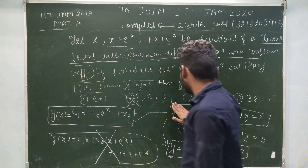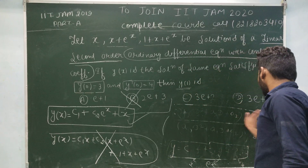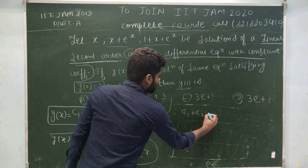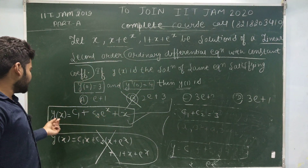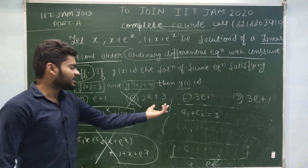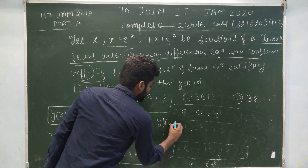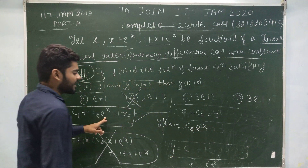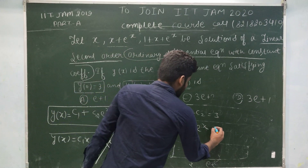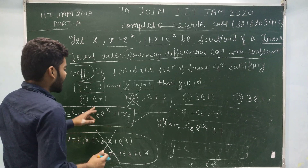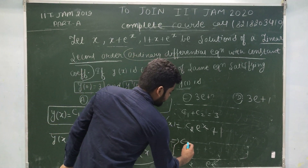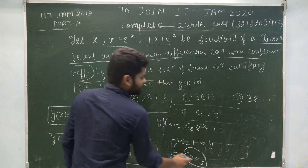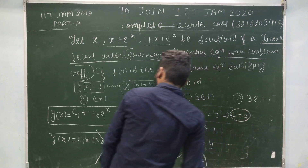With the correct form y(x) = c₁ + c₂e^x + x, it is very easy to solve. Applying y(0) = 3: putting x = 0 gives c₁ + c₂ = 3. Now differentiating, y'(x) = c₂e^x + 1. Applying y'(0) = 4: c₂ + 1 = 4, so c₂ = 3. Substituting back, c₁ + 3 = 3, which gives c₁ = 0.